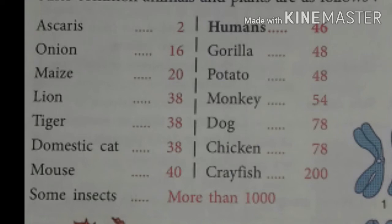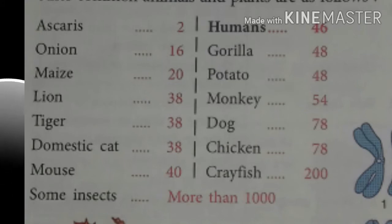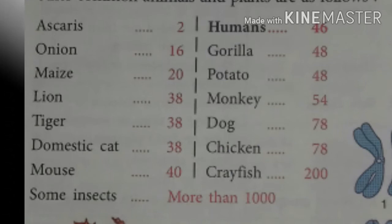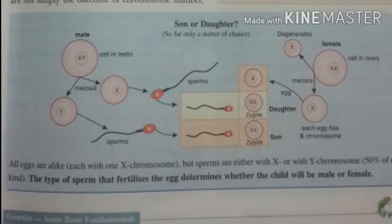Ascaris has 2 chromosomes. Onion (Allium cepa) has 16 chromosomes. Maize has 20 chromosomes. Lion has 38, tiger has 38, domestic cat has 38, and mouse has 40. Some insects have more than 1000 chromosomes. Humans have 46 chromosomes, meaning 23 pairs. Gorilla has 48, potato has 48, monkey has 54, dog has 78, chicken has 78, and crayfish has 200 chromosomes.